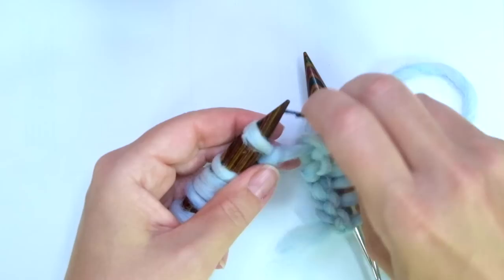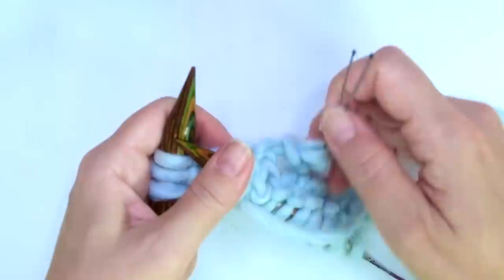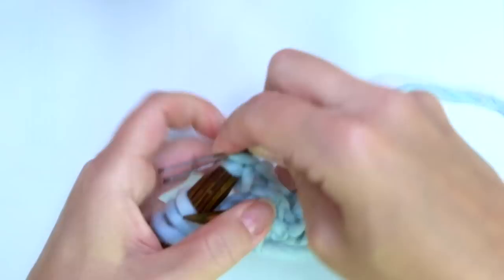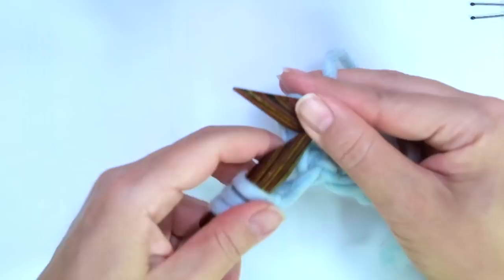Let's do it again. Take your cable needle or stitch holder or bobby pin and put 2 stitches there. Hold them at the back of the work. Knit 2. And now, take both of them and put them back onto the left hand needle. And knit both.